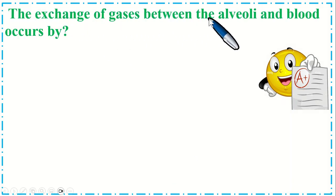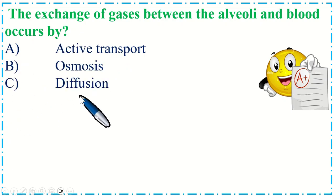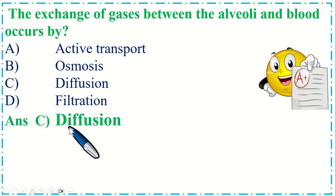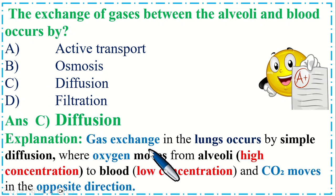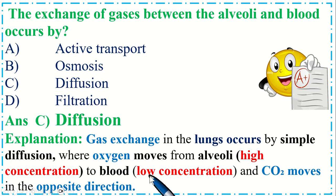The exchange of gases between the alveoli and blood occurs by: Option A: Active transport, B: Osmosis, C: Diffusion. Gas exchange in the lungs occurs by simple diffusion, where oxygen moves from the alveoli (high concentration) into the blood (low concentration), and CO2 moves in the opposite direction.